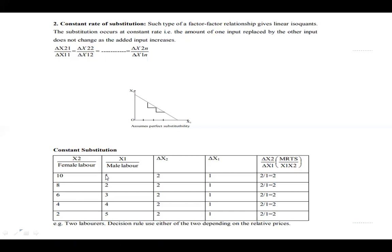For example, x2 represents female labor and x1 represents male labor. As quantities of x2 decrease and quantities of x1 increase, we calculate the changes in each. The MRS formula is change in x2 upon change in x1. From the second combination onwards the changes remain constant in both inputs, so MRS equals a constant value — say 2 — at every combination. This confirms a constant rate of substitution.